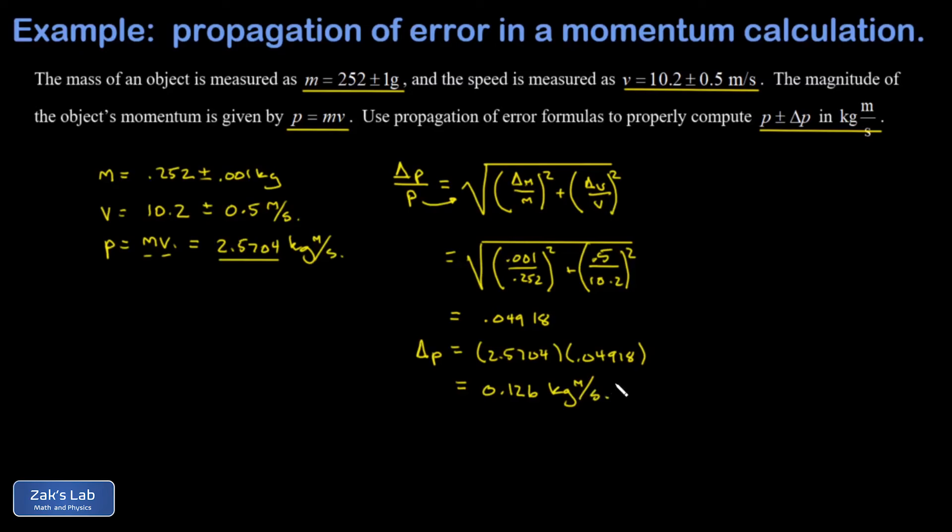Now there's a rounding convention that I like to use where we round uncertainties to one significant digit, so this would round down to 0.1. And then we round the actual quantity to the same decimal place, so to the tenths place, and that's going to round up because there's a seven in the hundredths place.